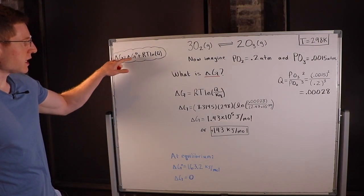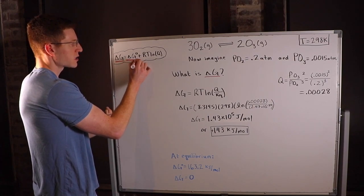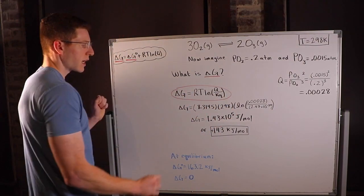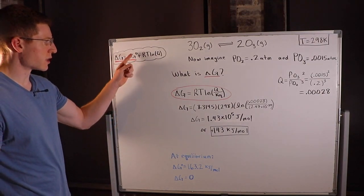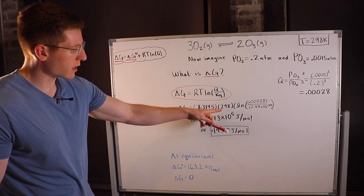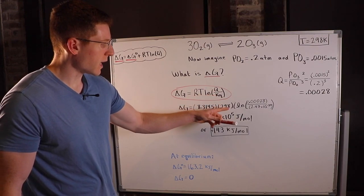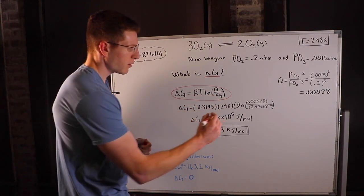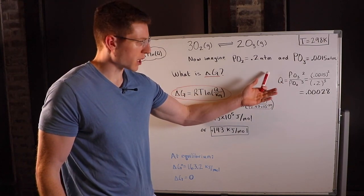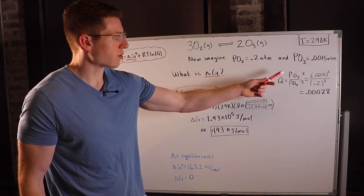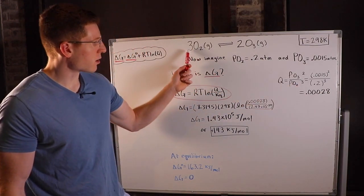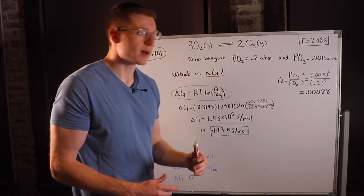We know delta G = delta G° + RT ln(Q), or equivalently delta G = RT ln(Q/K). Using the latter equation, we already have K from the previous calculation. Now we need Q: Q equals the pressure of O₃ squared over the pressure of O₂ cubed, based on stoichiometric coefficients. Plugging in the pressures gives Q = 0.00028.